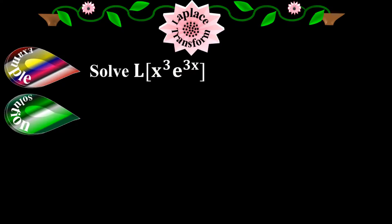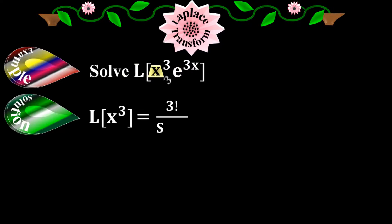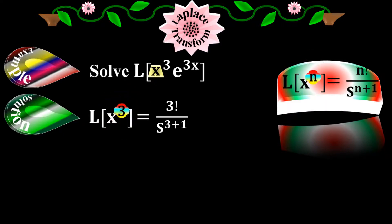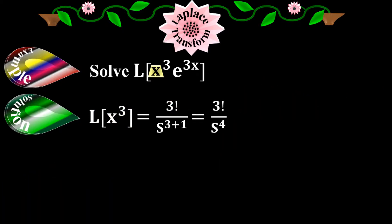Solution. Since the given function is the product of two sub-functions — x to the 3 and e to the 3x — let me first take x to the 3. We have the Laplace of x to the 3 equals 3 factorial over s to the 3 plus 1. I applied the first elementary function formula: Laplace of x to the n equals n factorial over s to the n plus 1, where n is 3. So it equals 3 factorial over s to the 4.